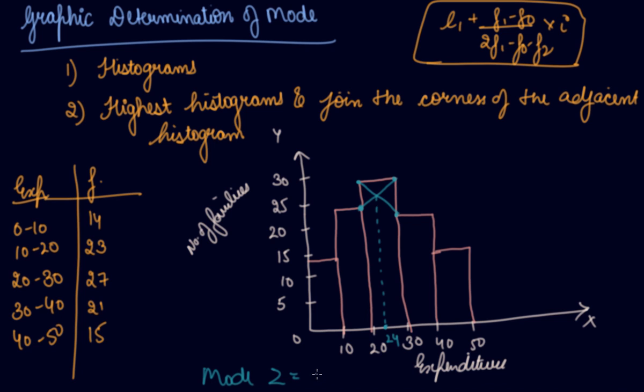So the mode, that is Z, equals 24. This is how you locate mode using a graph—the graphical determination of mode.